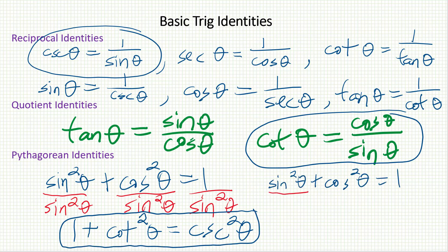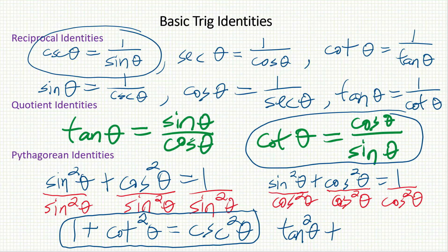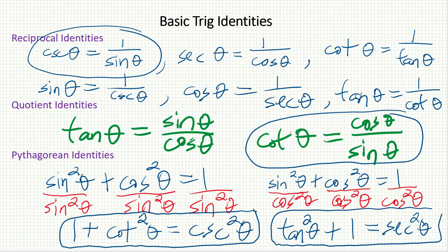There's one more Pythagorean identity, obtained by dividing every term by cosine squared theta. Sine over cosine is tangent, so that becomes tangent squared theta. Cosine squared divided by itself is 1. And 1 over cosine is secant, so that becomes secant squared theta. The third Pythagorean identity is: tangent squared theta plus 1 equals secant squared theta. So we have the original one involving sine and cosine, the second involving cotangent and cosecant, and the third involving tangent and secant.